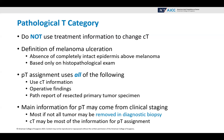For the pathological T category, do not use information from the treatment to go back and change the clinical T — it is what was known at that point in time. The definition of melanoma ulceration is the absence of completely intact epidermis above the melanoma, which cannot be seen and is based only on histopathological exam. PT assignment uses the clinical T information, the operative findings, and the pathology report of the resected primary tumor specimen. The main information for PT may actually come from clinical staging, as most or all of the tumor may be removed in the diagnostic biopsy.